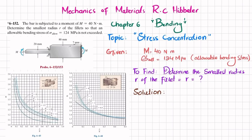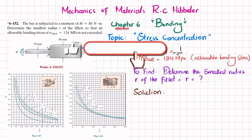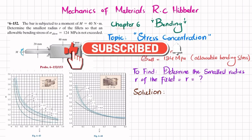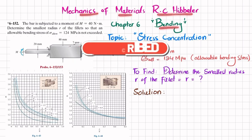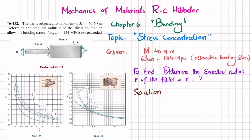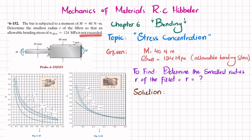Welcome back. In this video we are going to solve problem 6-152 taken from chapter number 6 on bending from the book Mechanics of Materials by R.C. Hibbeler. The topic is stress concentration. The statement is: the bar is subjected to a moment of 40 newton-meters. Determine the smallest radius r of the fillet so that the allowable bending stress of 124 megapascal is not exceeded.